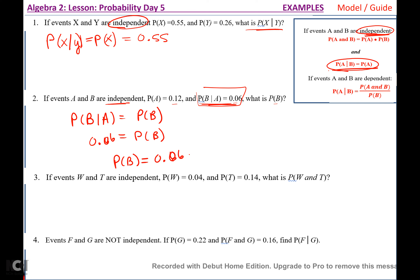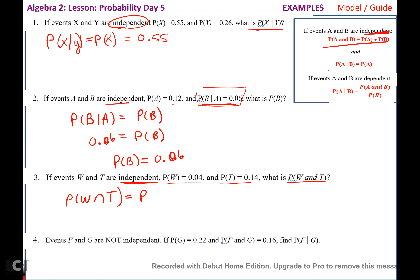Number three: if events W and T are independent, and they give me P(W) and P(T), what's P(W and T)? For independent events, P(W and T) = P(W) × P(T). P(W) = 0.04, P(T) = 0.14, which gives a product of 0.0056.